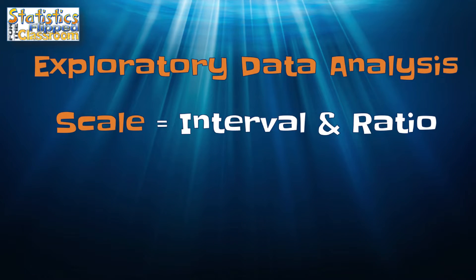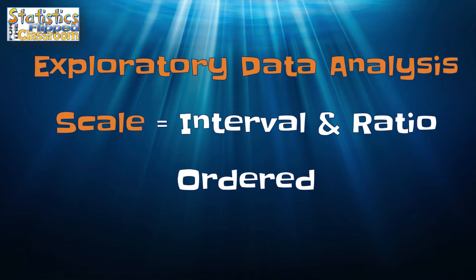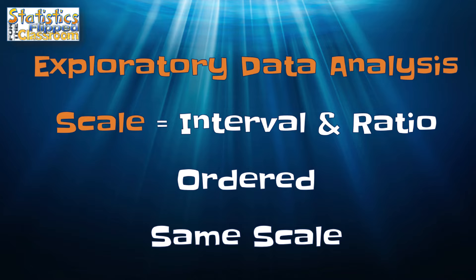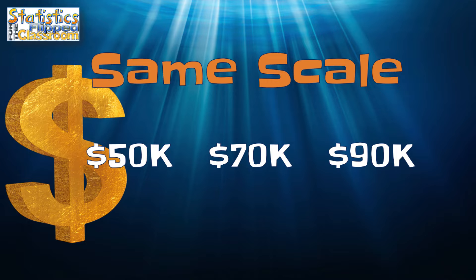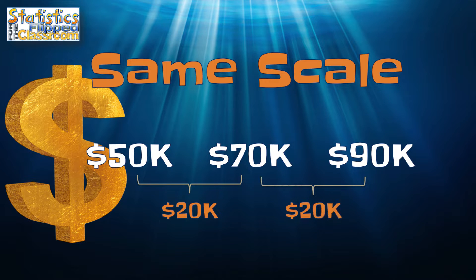Interval and ratio data are both called scale data in SPSS. Both interval and ratio data are ordered values, but the distance between the values in the scale is always the same. In other words, a centimeter is exactly the same size anywhere along that tape measure. An income of 70,000 is more than an income of 50,000, and the distance between those values is exactly 20,000. An income of 90,000 is the exact same 20,000 higher than an income of 70,000.